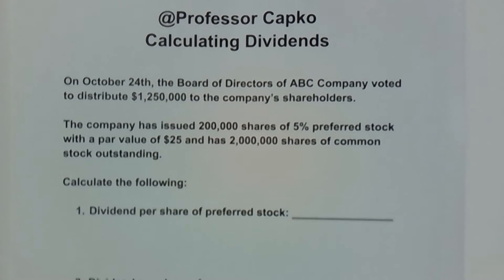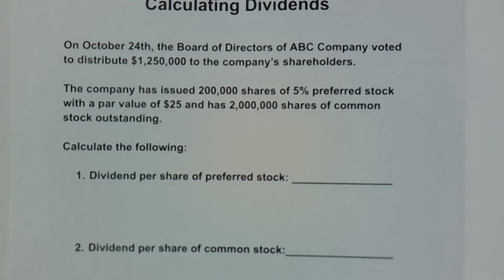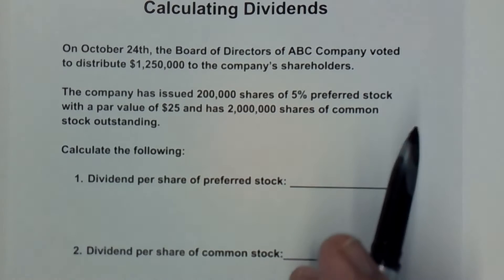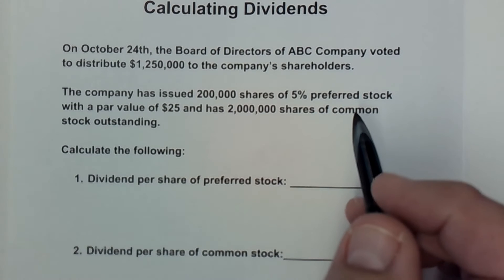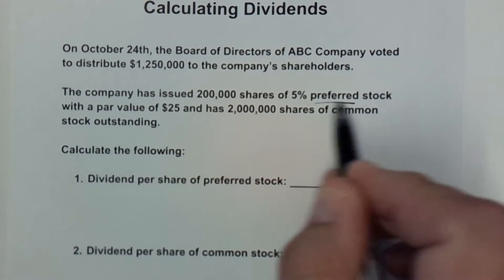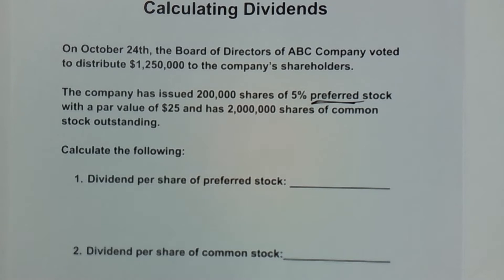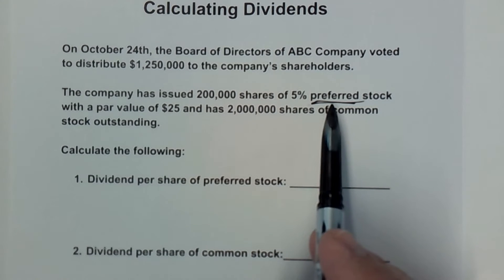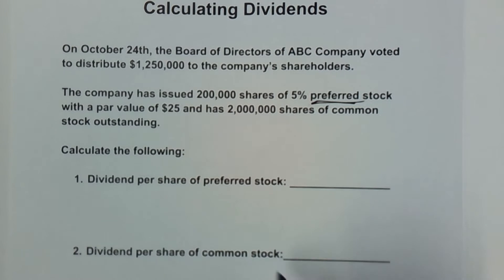Here we've got two classes of stock, which is typical. We have preferred stock and we have common stock. The main thing you want to know is that preferred stock is paid first — hence the name 'preferred.' They get paid before the common shareholders. So if the full amount gets paid out to preferred shareholders, the common shareholders won't receive anything, and they know that going into this.